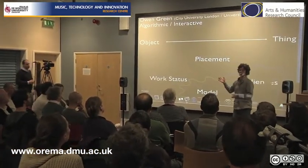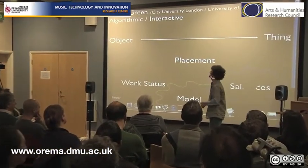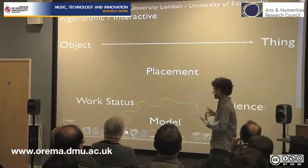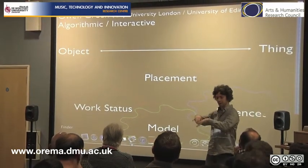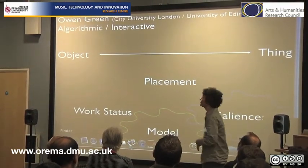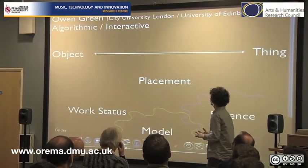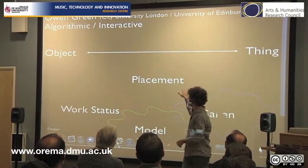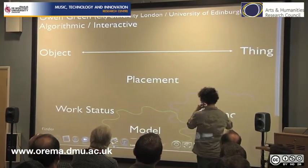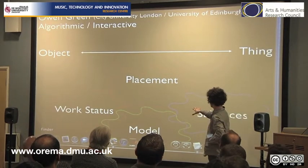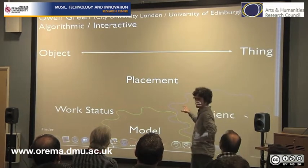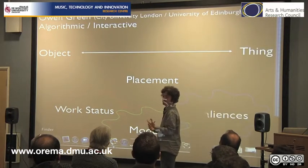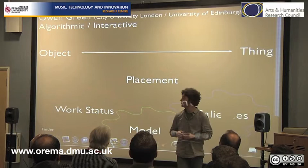I've never dabbled in algorithmic composition in a straightforward way. Nonetheless, I've had a go at thinking of some kind of distinctive categories that might deal with the whole gamut of algorithmic and interactive play. I'm going to come to the object thing thing towards the end, but first I want to concentrate on these squidges here. They're deliberately squidgy because they're meant to represent fuzzy and messy categories that interfere with each other.